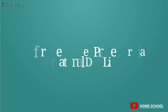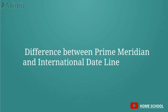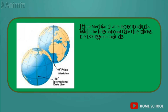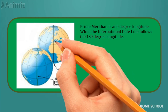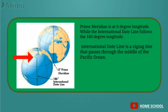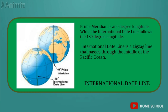Now let's look at the difference between the prime meridian and the international date line so we don't get confused. Both run from north to south but are opposite to each other. The prime meridian is at zero degree longitude, while the international date line follows the 180 degree longitude. The prime meridian is a straight line passing through Greenwich, London, England. The international date line, on the other hand, is a zigzag line that passes through the middle of the Pacific Ocean.